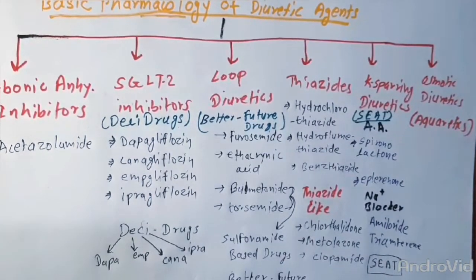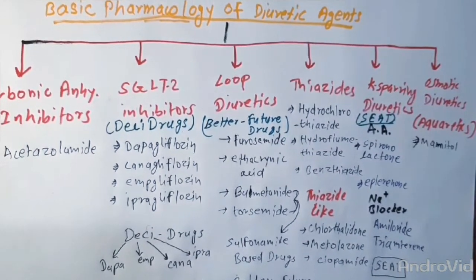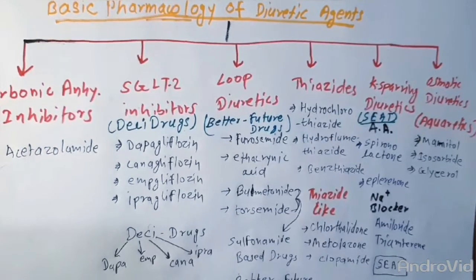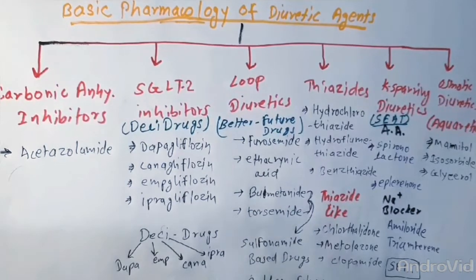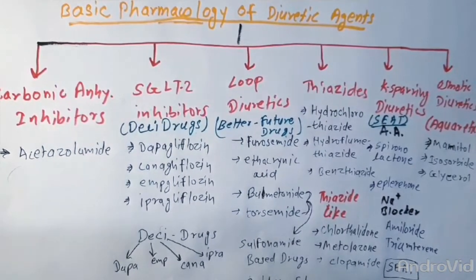The osmotic diuretics include mannitol, isosorbide, and glycerol. Let's discuss these drugs one by one, with their pharmacokinetics, pharmacodynamics, clinical indications, adverse effects, and contraindications.